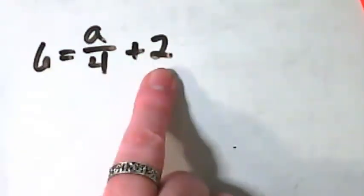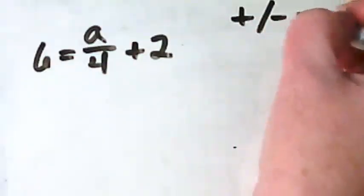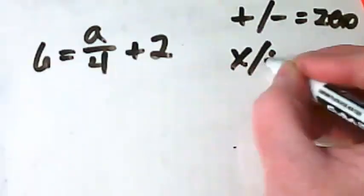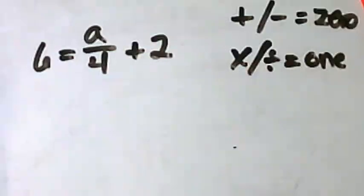And if I'm adding or subtracting, what am I trying to get to? A zero. Remember this, adding/subtracting, we want a zero. If we're multiplying or dividing, we want to get to a one. Keep that in mind as we work through this.